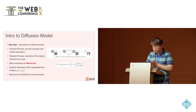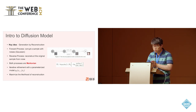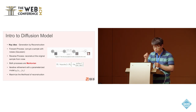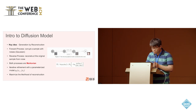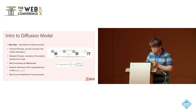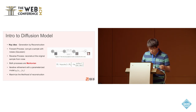In original diffusion models, both processes are Markovian, meaning the corruption process only depends on the current state of the image, and the reverse step only considers the current corrupted sample to reconstruct. The loss function is to maximize the likelihood of reconstruction. Since it is usually intractable, the surrogate loss function is the ELBO loss.